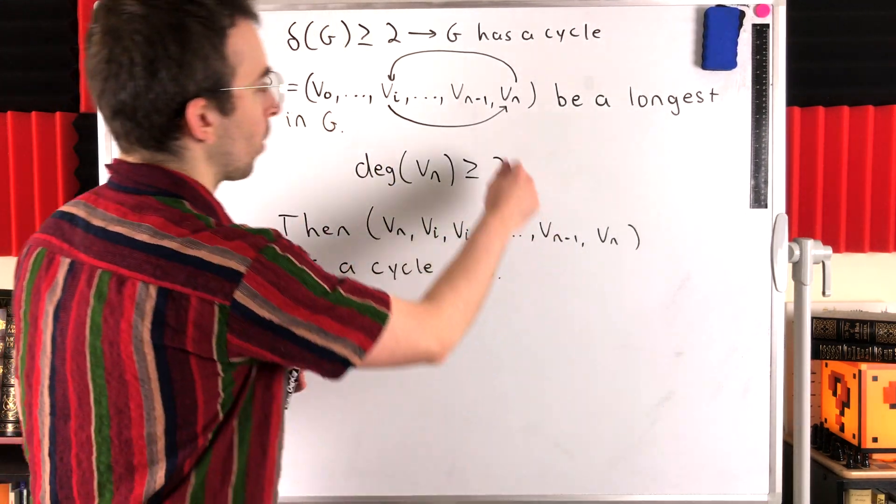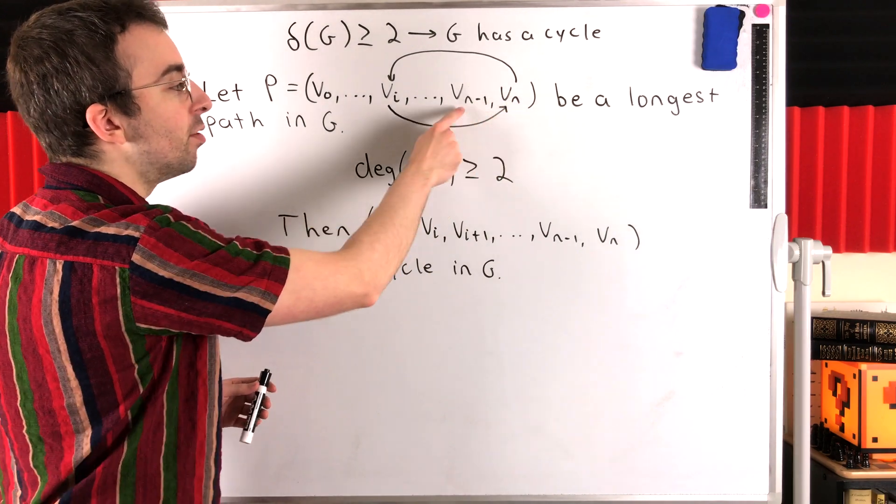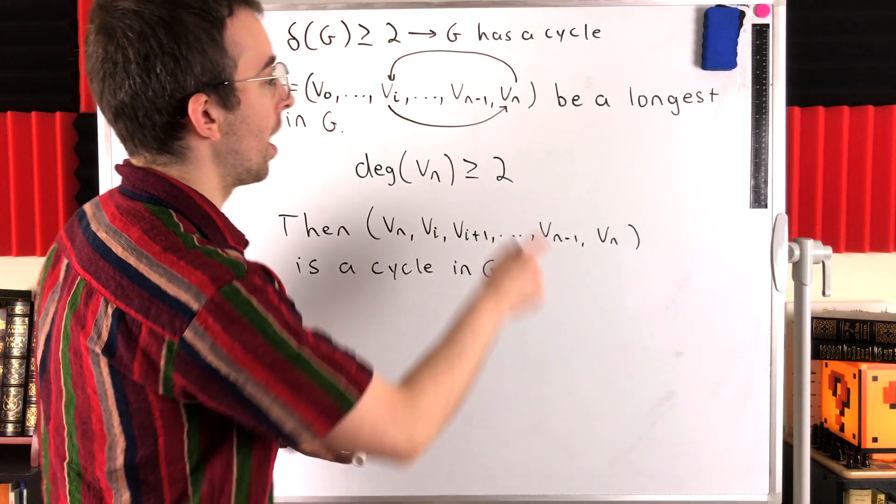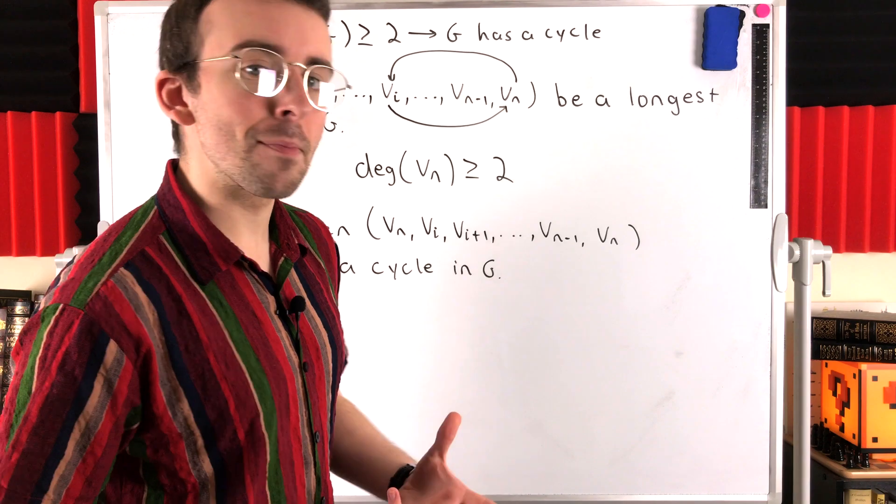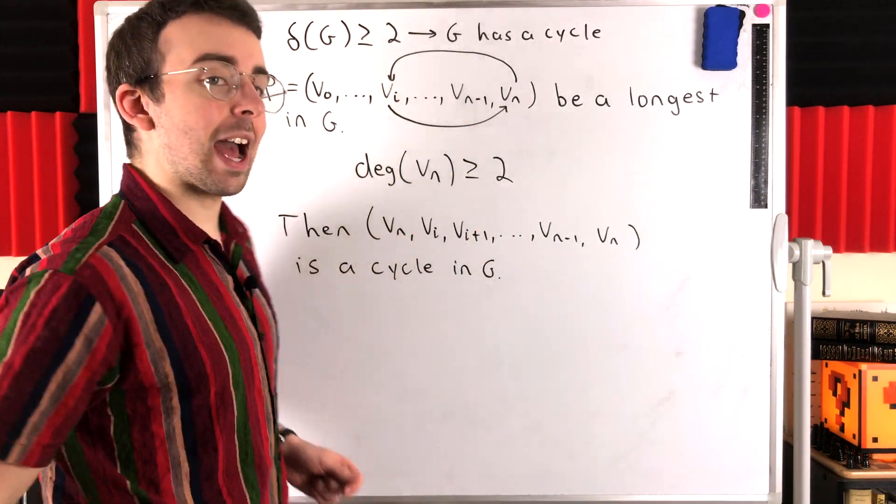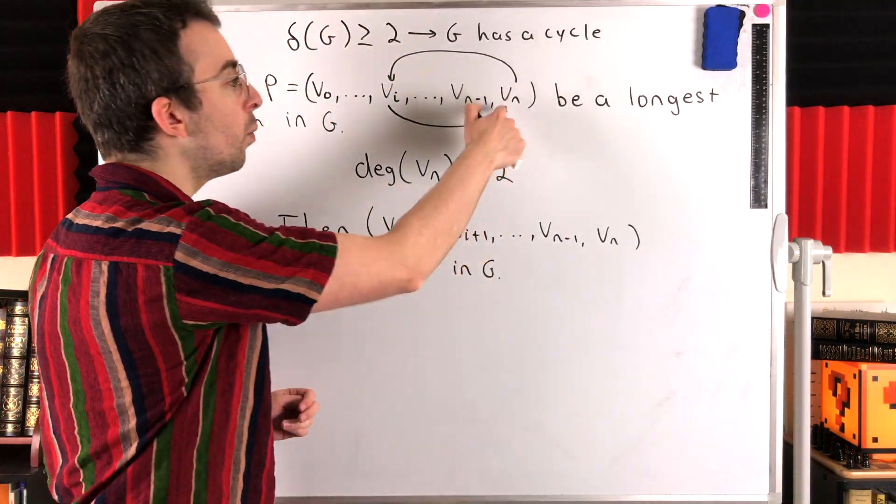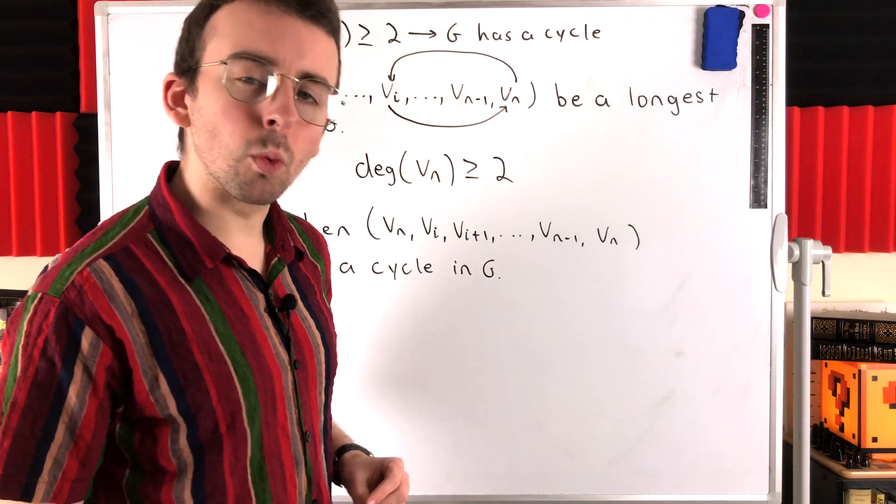So let's run through the logic one more time. We know that VN is adjacent to VN minus one, the vertex that precedes it in the path. But because the minimum degree of the graph has to be at least two, we know that VN has at least one other neighbor.